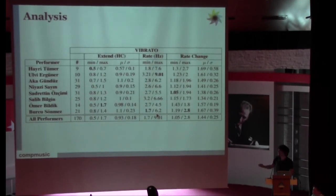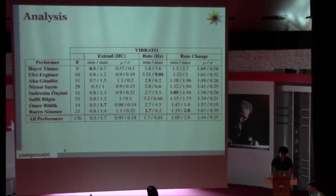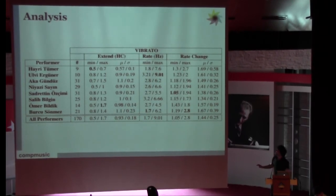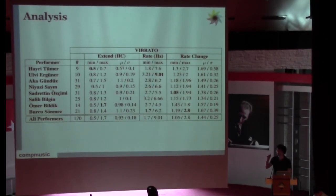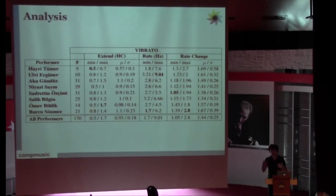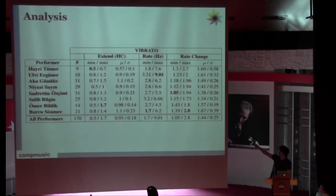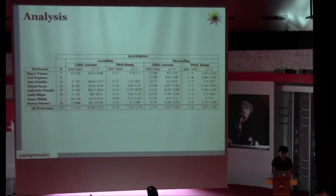For the analysis, these are the data. I will talk a little bit more about the interesting part: there are some regularities in vibrato, actually. Especially the extent—players are really regular for this one. The extent is usually one holder comma, except Hyritomer, who is the oldest player. I can understand he has a different style of vibrato, which is softer, and his extent is shorter than the other ones.